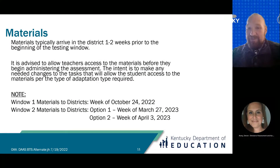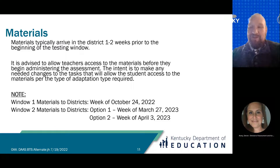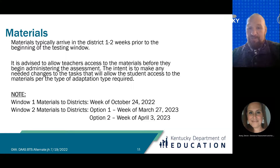Materials will ship and arrive based on the timeline on the slide. Materials for Window One are expected to arrive in the district the week of October 24th. For Window Two, options will be available as in the past to accommodate spring breaks. In late February, districts will be asked to select shipping Option One or Two based on when they take spring break — if no selection is made, Option One will be the default. Window Two Option One ships the week of March 27th, and Option Two ships the week of April 3rd.